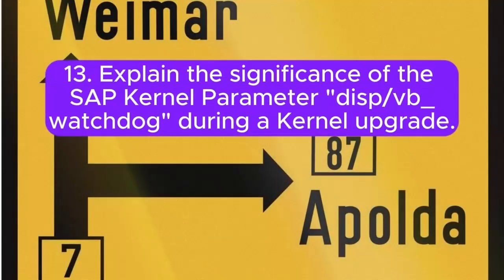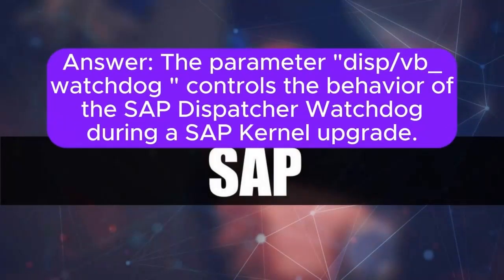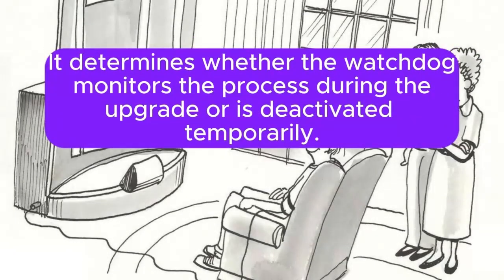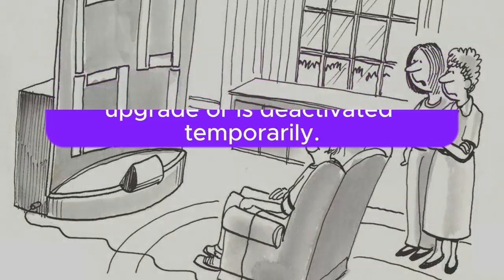13. Explain the significance of the SAP kernel parameter disp+work watchdog during a kernel upgrade. The parameter disp+work watchdog controls the behavior of the SAP dispatcher watchdog during a SAP kernel upgrade. It determines whether the watchdog monitors the process during the upgrade or is deactivated temporarily.